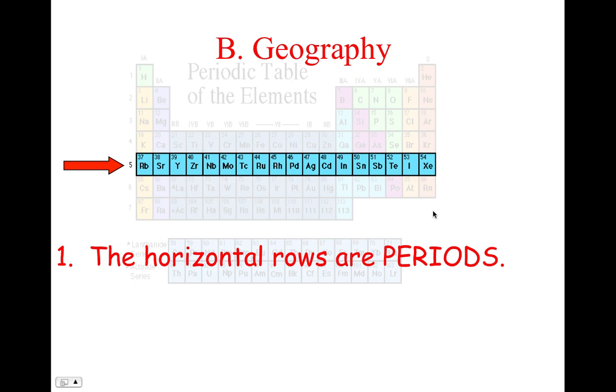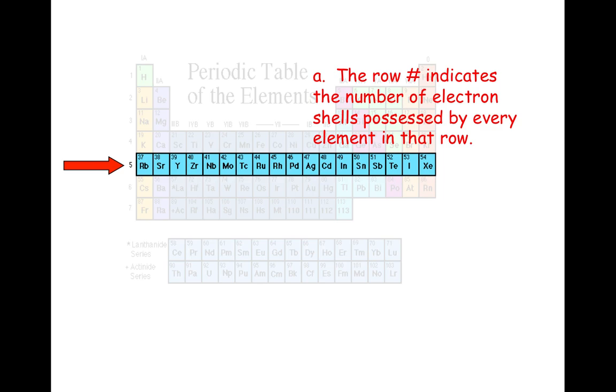Now let's get into the geography of the different rows and columns. The horizontal rows we call periods. Anything that runs horizontal, we call periods, and we number them starting at the top: one, two, three, four, five, etc. I remember that because at the end of a sentence, you always put a period, and sentences run horizontally. The periods tell us the number of electron shells possessed by every element in that row.